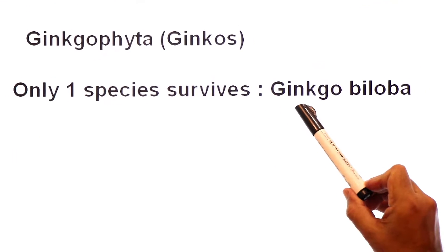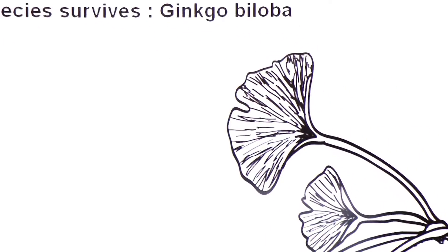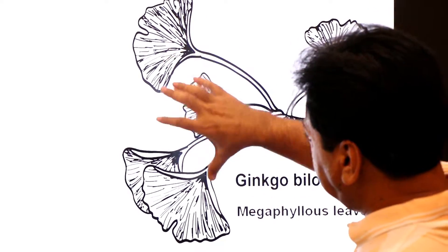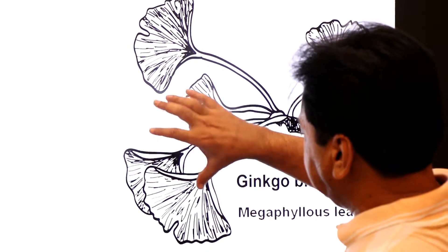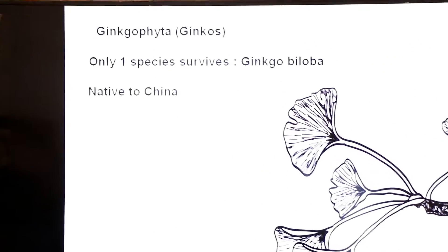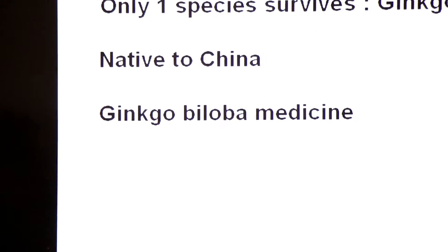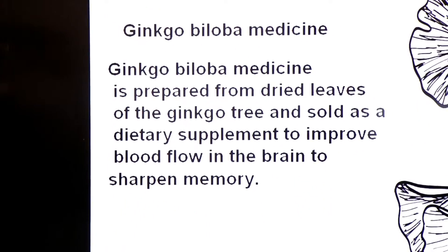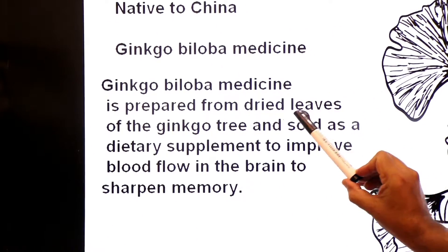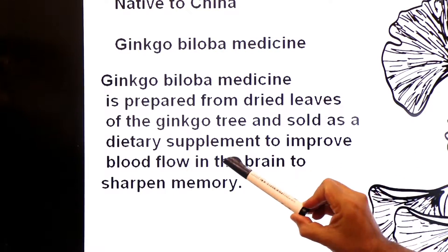Ginkgophyta has only one surviving species — Ginkgo biloba. Here you see the megaphyllous leaves of Ginkgo biloba. In ke leaves ko dry karke in se ek medicine banai jati hai — in ke leaves ki medicinal value hai. They are native to China. Ginkgo biloba medicine is prepared from the dry leaves of the Ginkgo tree and sold as a dietary supplement to improve blood flow in the brain and to sharpen memory.